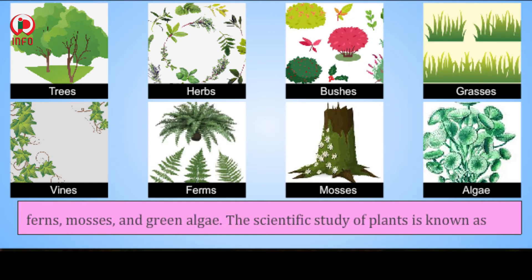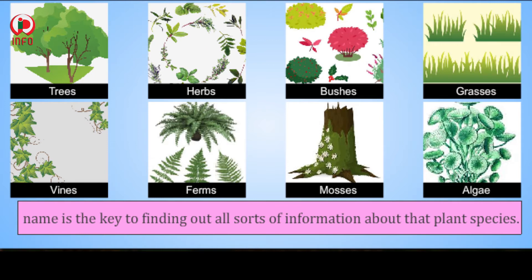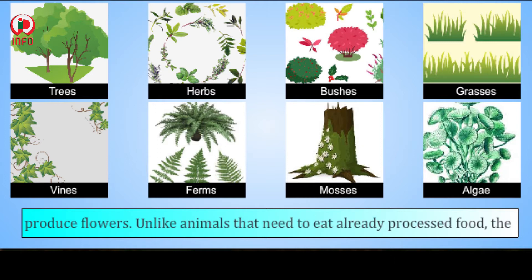vines, ferns, mosses, and green algae. The scientific study of plants is known as botany. All plants are classified and have scientific names. A plant's scientific name is the key to finding out all sorts of information about that plant species. There are over three lakh species of plants, of which more than two lakh fifty thousand produce flowers.